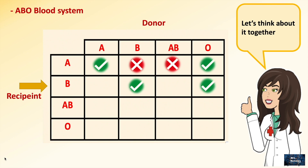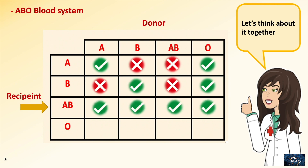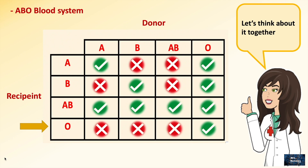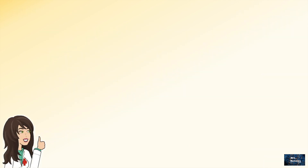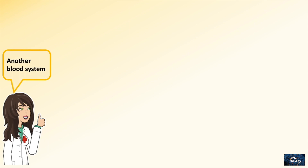Moving to blood type B, it can receive from B and O only, but not from A or AB, because of the absence of the A antigen. Moving to AB, it contains both antigens, meaning it will receive from all blood types. But for blood type O, neither A nor B antigen is present on its RBCs, so it will receive only from O — not from A, B, or even AB.